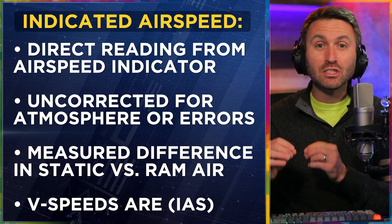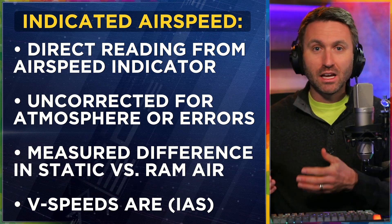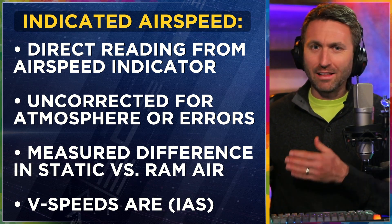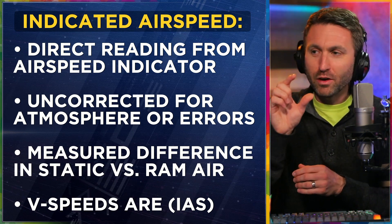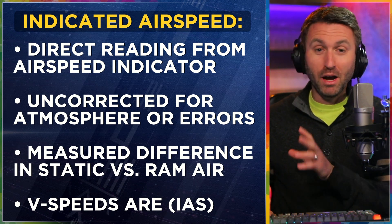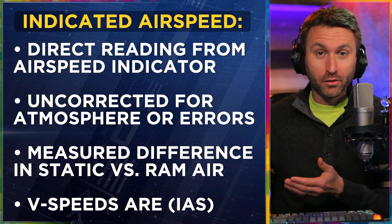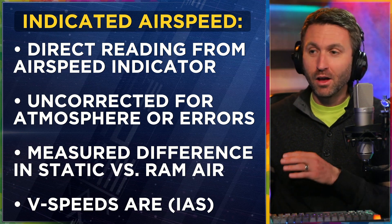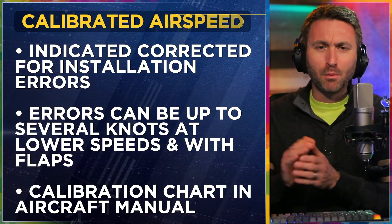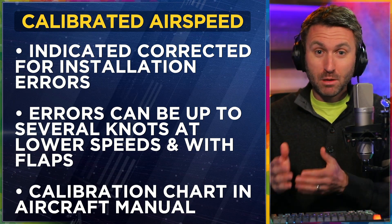V-speeds are measured in indicated airspeed. When you talk about rotation speed, flap speed, gear extended speed — all of that is for indicated airspeed. You don't have the time or brain capacity to figure out calibrated airspeed as a V-speed; you want it as simple as it gets right there on the airspeed indicator, whether it's tape or an old-fashioned steam gauge. There's a lot to interpret on the airspeed indicator with those colors — the white arc for flaps range, the green arc for normal operating range, the yellow area for caution, and the red line. All of those correspond to different V-speeds, all measured in indicated airspeed.